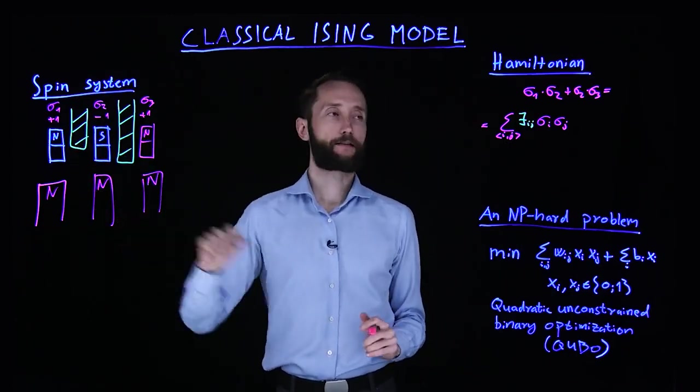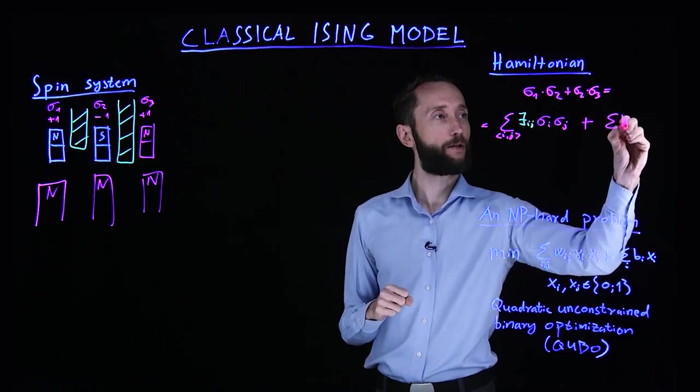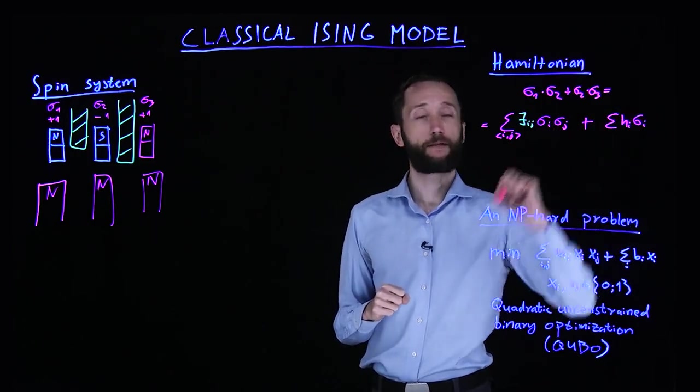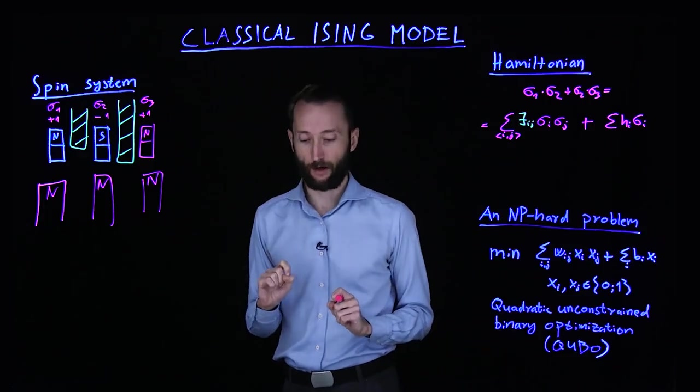So we model this external field by adding one more term here, which is going to be the strength of that field, h_i times the actual sigma i, the value of the random variable in that spot.